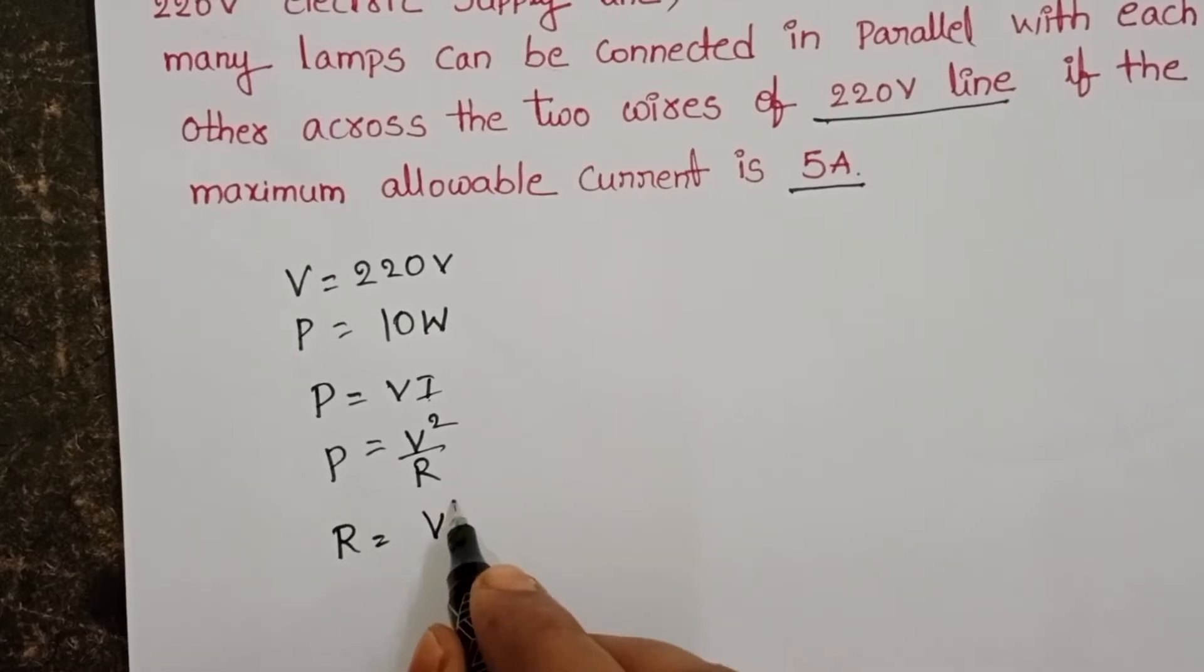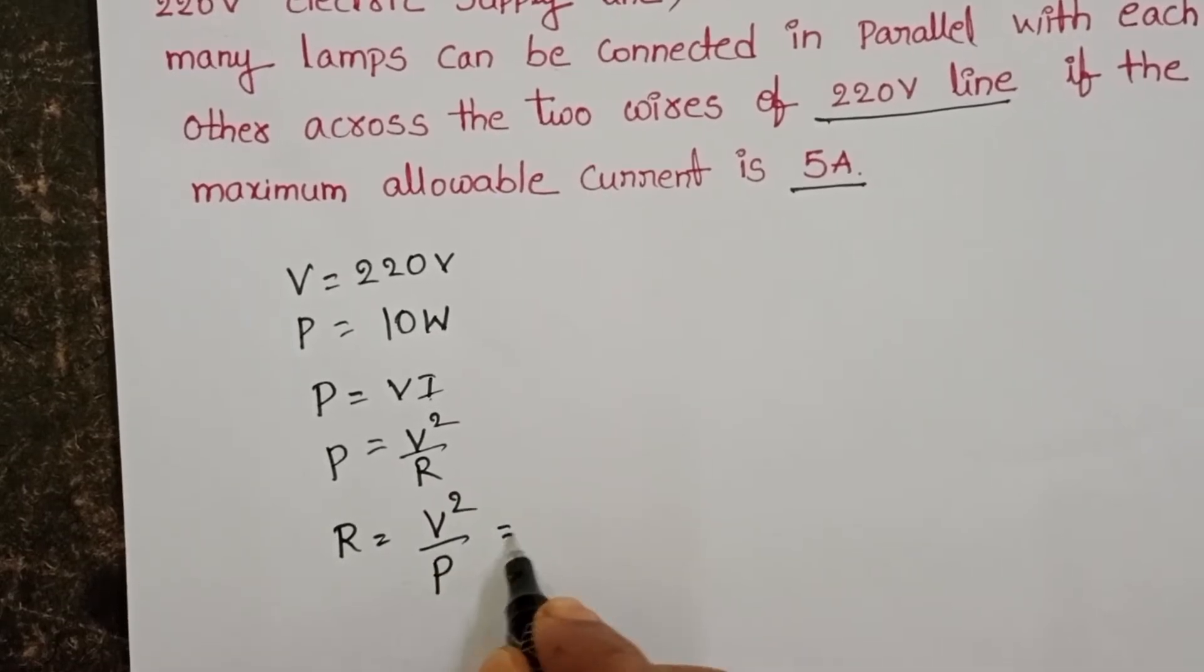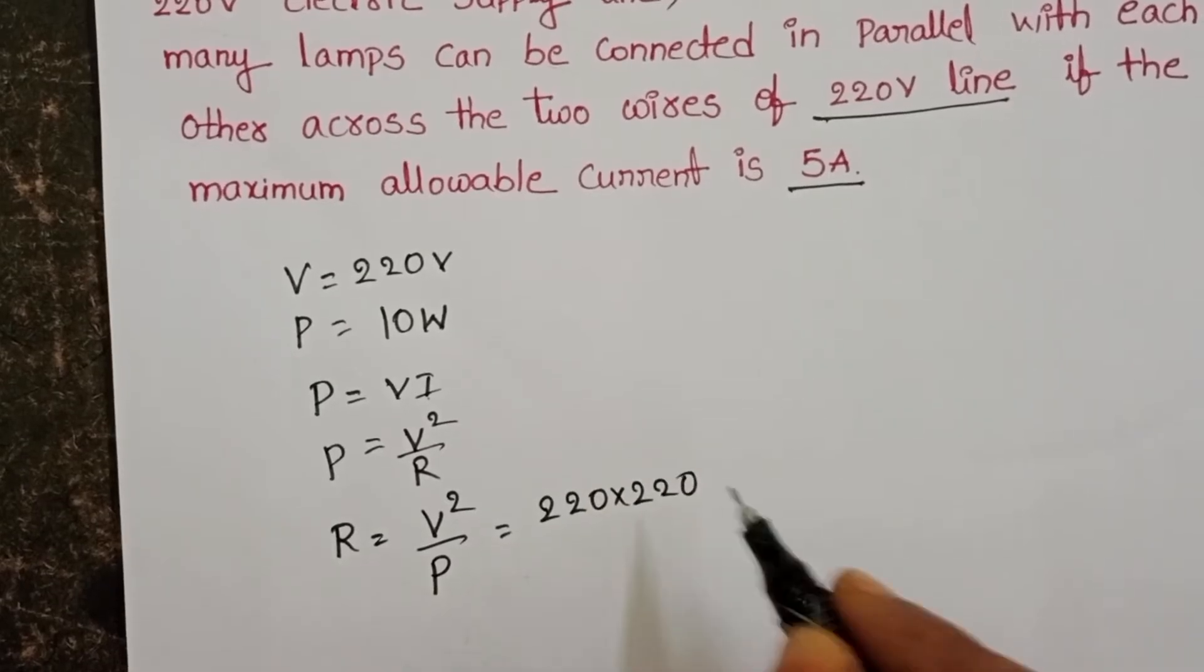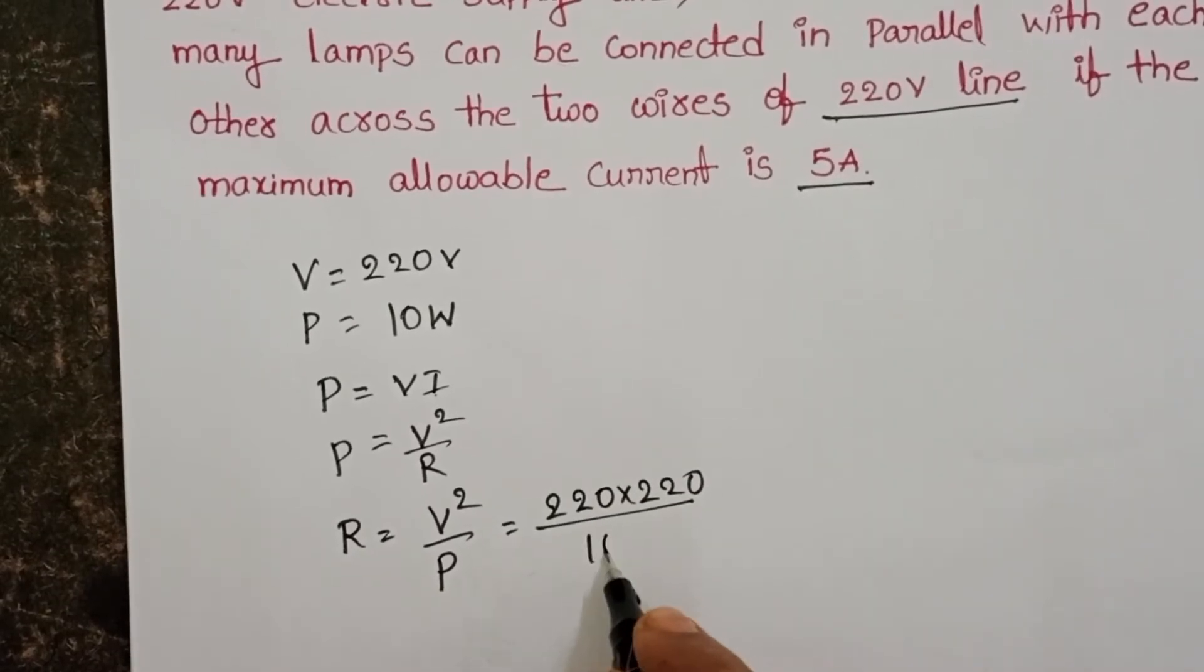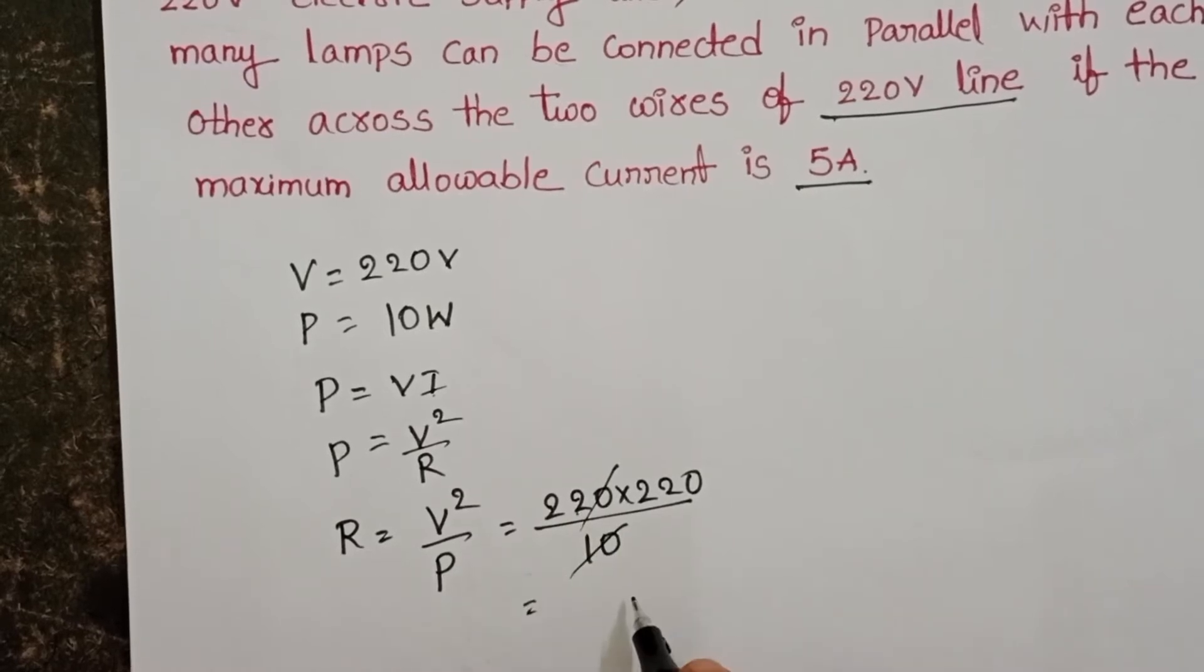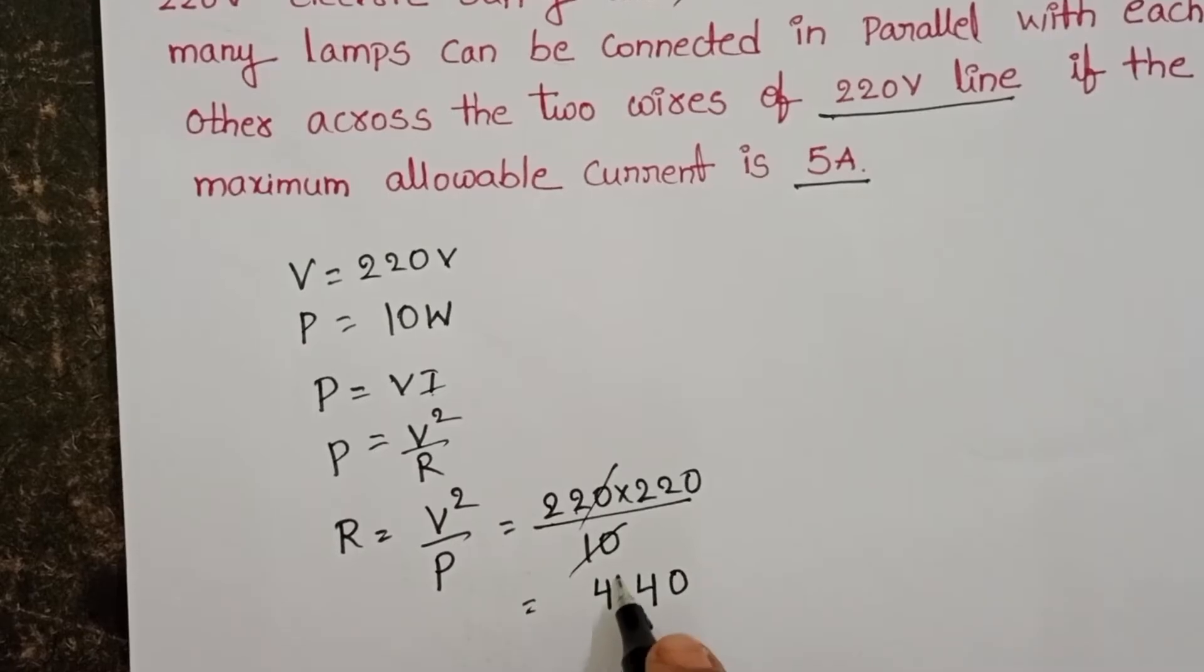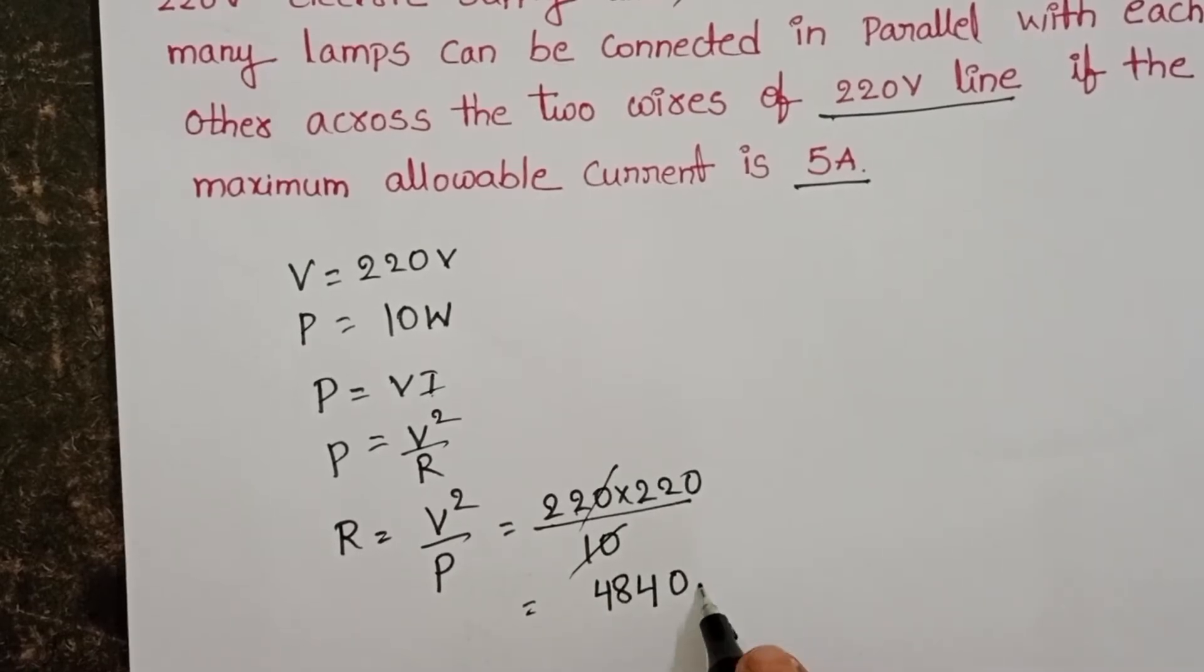Resistance of the bulb equals V squared by P: 220 into 220 by power is 10. 22 to 24, 22 to 44 plus 4, 4840 ohms.